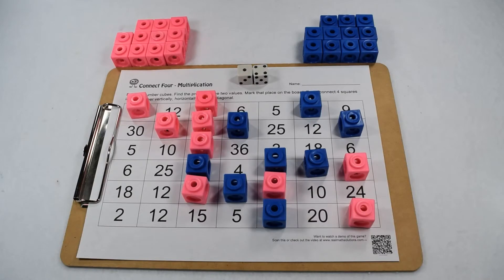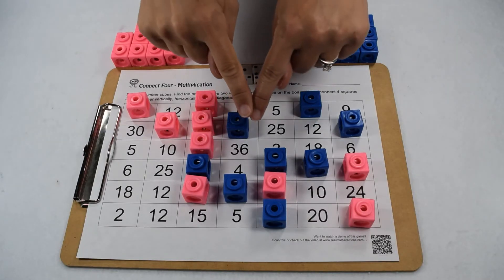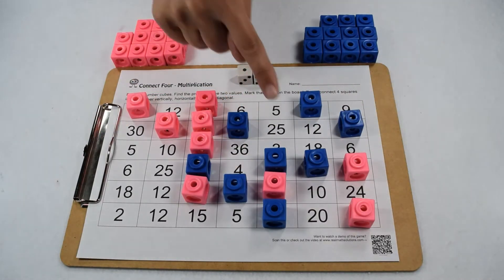As play continues, the goal of this game is to get four squares in a row, either horizontally, vertically, or diagonally.